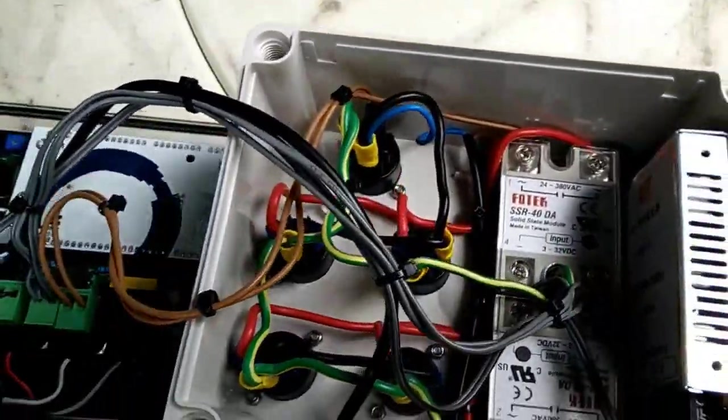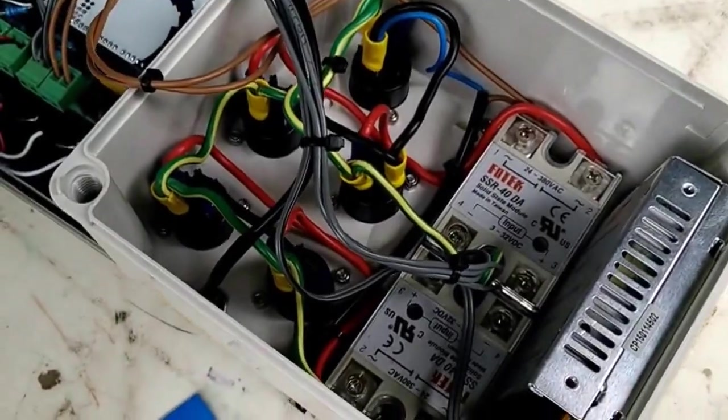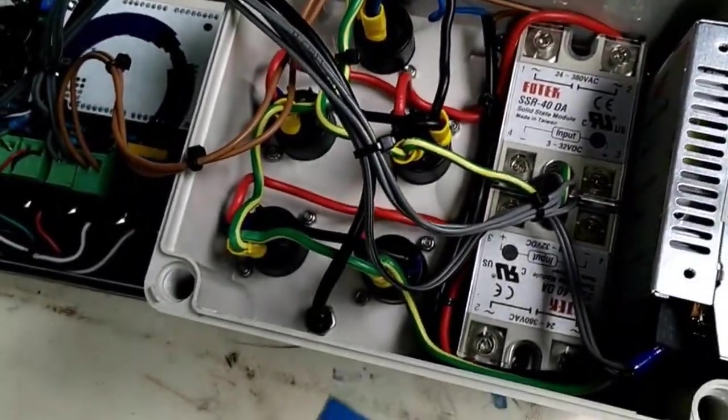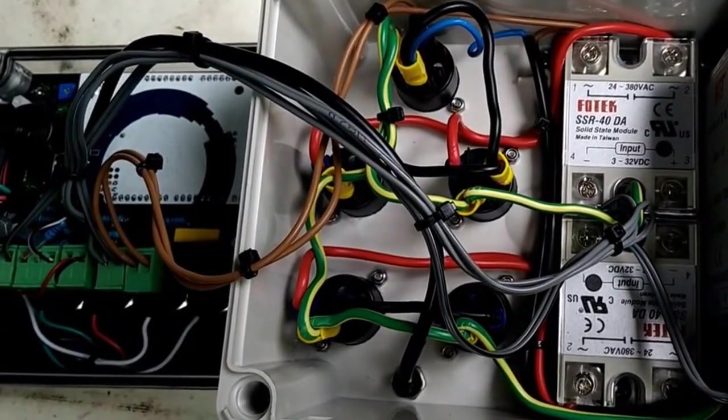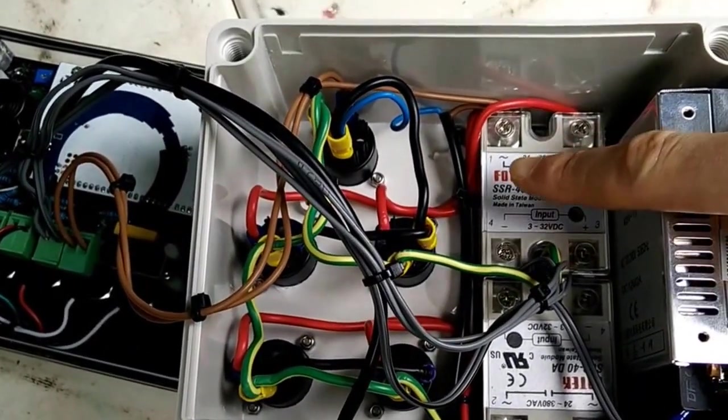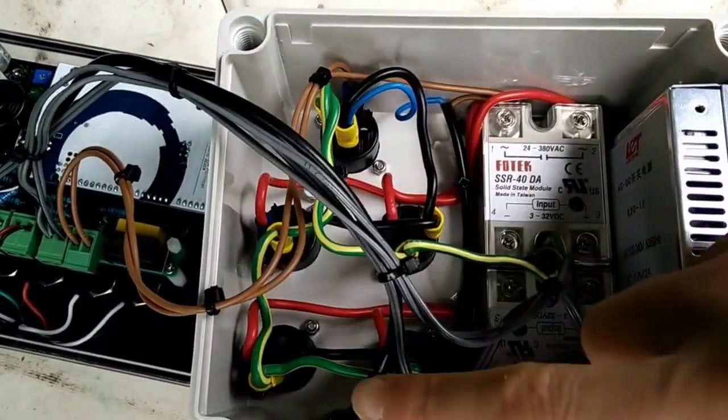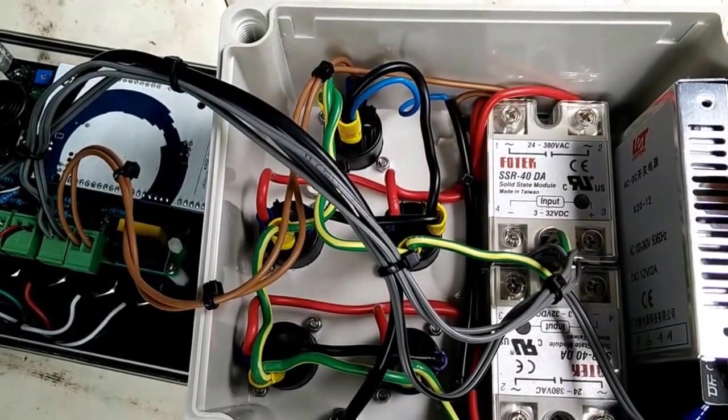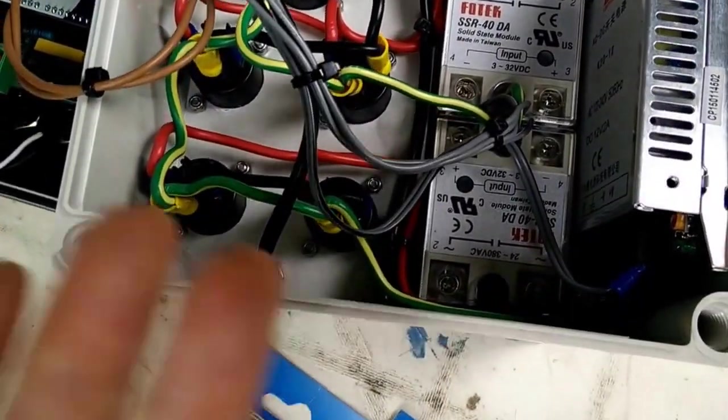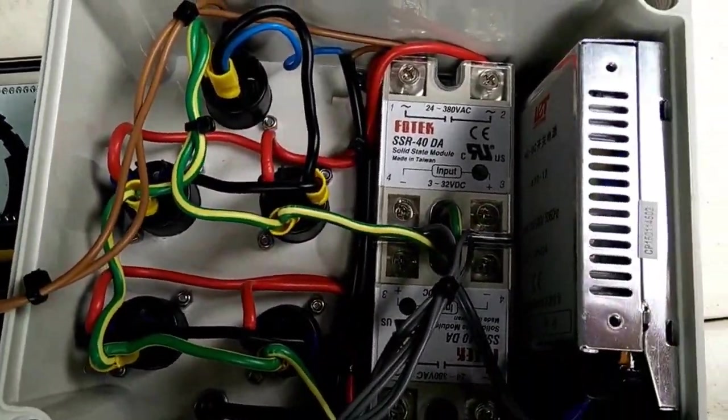So James has done a fantastic job of wiring this up just beautifully, nice and neat. We're going to try and get as much light on this as we can. So we can see a few things to start with. Obviously, we've got the power supply unit on the right hand side, so that converts your 240 to 12 volts. And then we've got the two SSRs, which will control the heating on and off. And then we've got our five sockets.